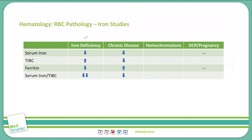With hemochromatosis, you will see an increase in serum iron. This is a holding on of iron in the body — sometimes this can be due to pathologies, other times it can be due to blood transfusions, where you're loading a lot of iron into the body. Someone who has frequent blood transfusions can get hemochromatosis.